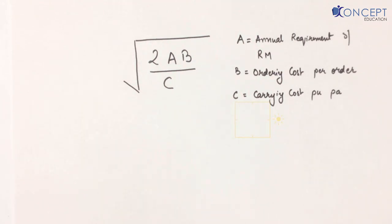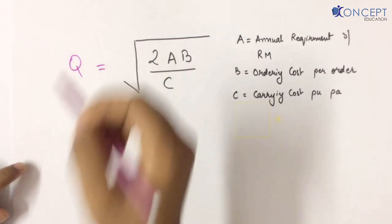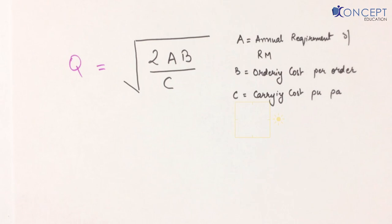So in the previous video we were thinking is 100 the magic number. Well, Wilson had thought about this a few years ago and he came up with a formula saying that if you want to find out what quantity you need to order, then you can use this simple formula and you will get a magic number.